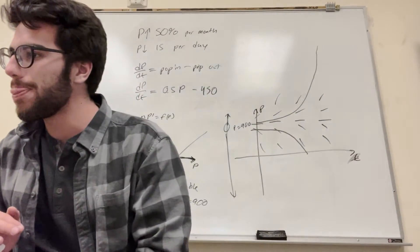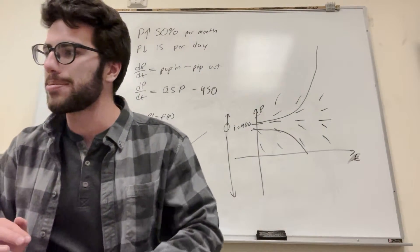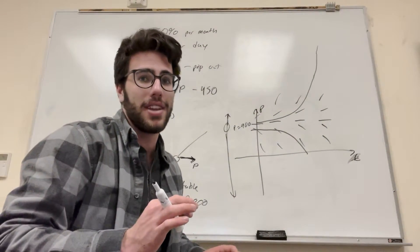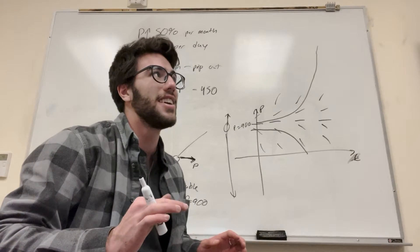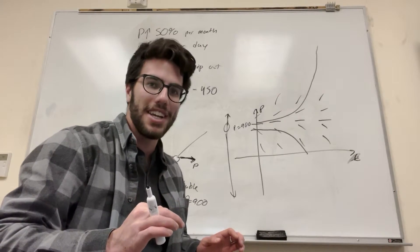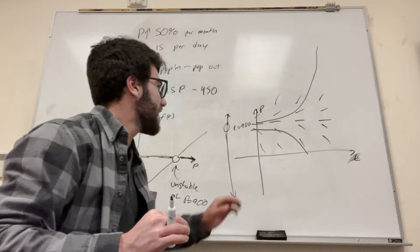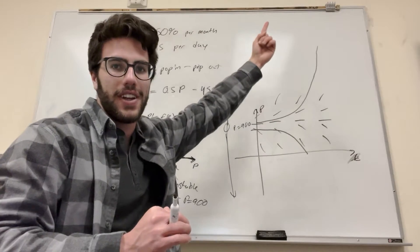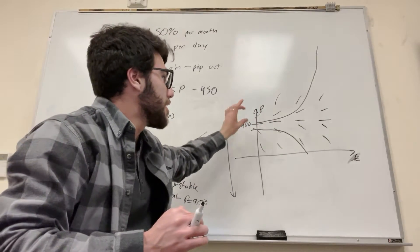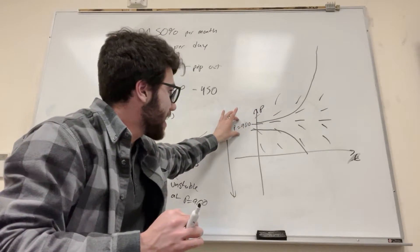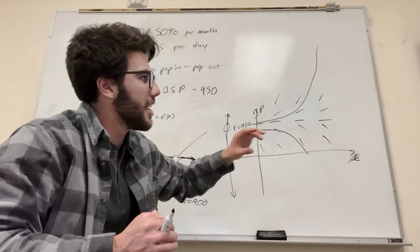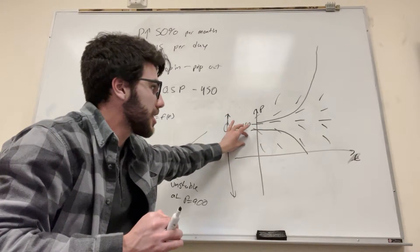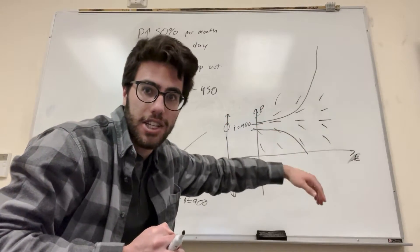Part C: if the initial population is greater than 900, we grow toward infinity. If the initial population is exactly 900, we stay still. If the initial population is below 900, it goes to extinction.